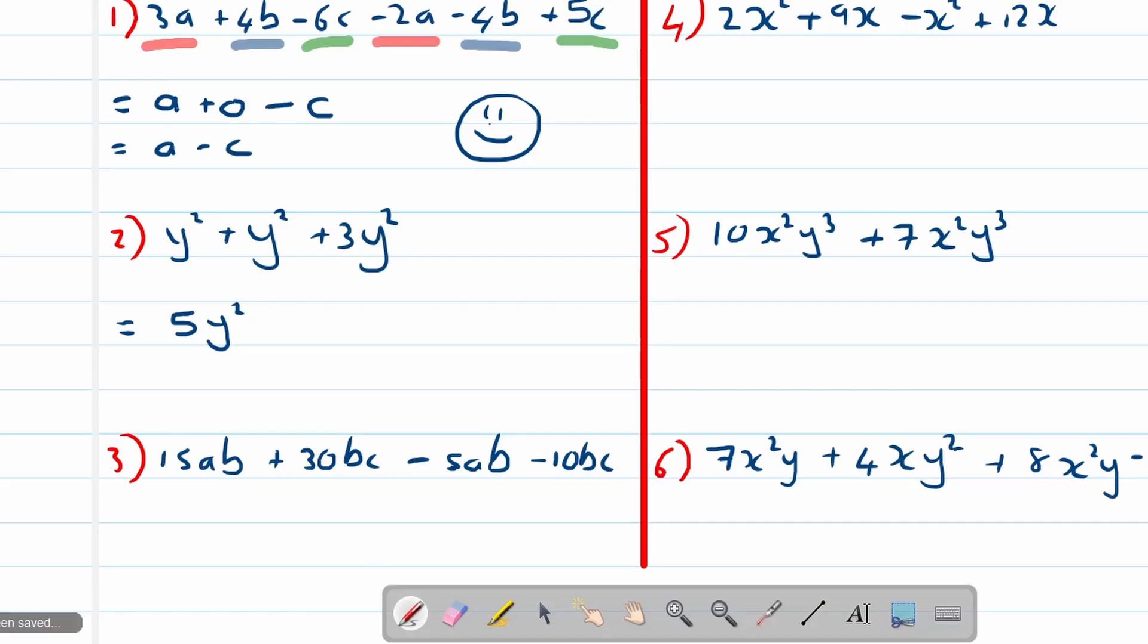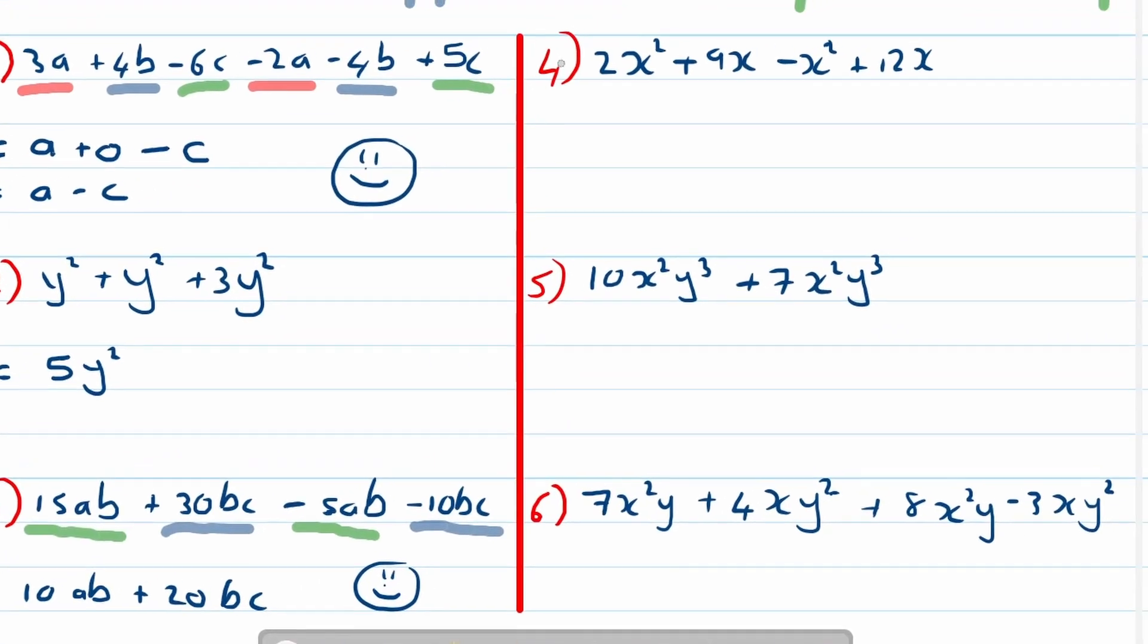Let's look at number three: 15ab + 30bc. Now you can see here we've got an ab and a bc, but these are not like terms. This is an a times b, this is a b times c. But you will notice that 15ab and negative 5ab are like terms, just like 30bc and negative 10bc are like terms. So again we'll approach it by using color: 15ab minus 5ab is equal to 10ab, and then 30bc minus 10bc is 20bc. So I'll say 10ab plus 20bc.